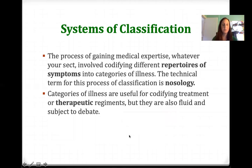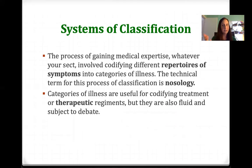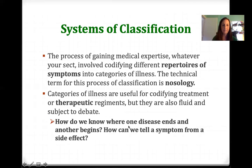Categories of illness are useful for codifying treatment or therapeutic regimen, but they're also fluid and subject to debate. One problem that people with serious illness — like multiple sclerosis — might have is that if they experience fatigue all the time, they might not know if that's a symptom of their disease or a side effect of their medicine. A lot of medicines given for chronic illnesses have a wide range of side effects, so it can be really hard to tell where the disease ends and the response to treatment begins. And how do we know where one disease ends and another begins? How can we tell a symptom from a side effect?